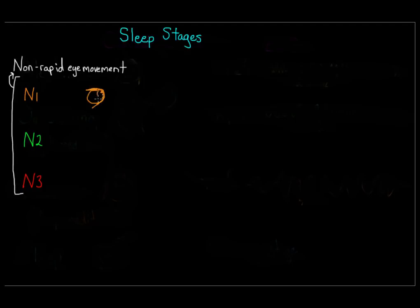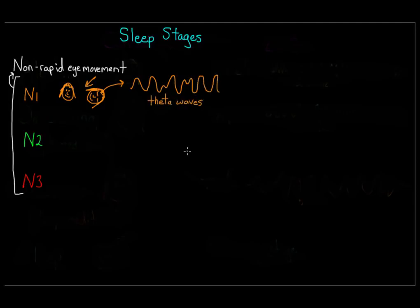During N1, your brain starts producing theta waves. You might experience strange sensations known as hypnagogic hallucinations — kind of a fun name — and these can include hearing or seeing things that aren't there, such as seeing a flash of light.